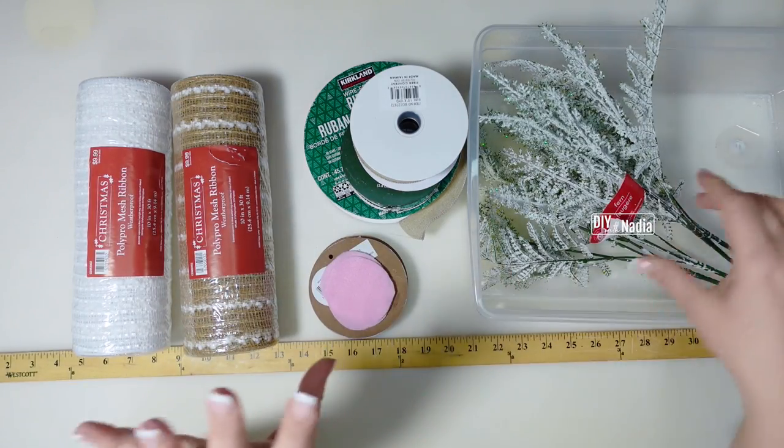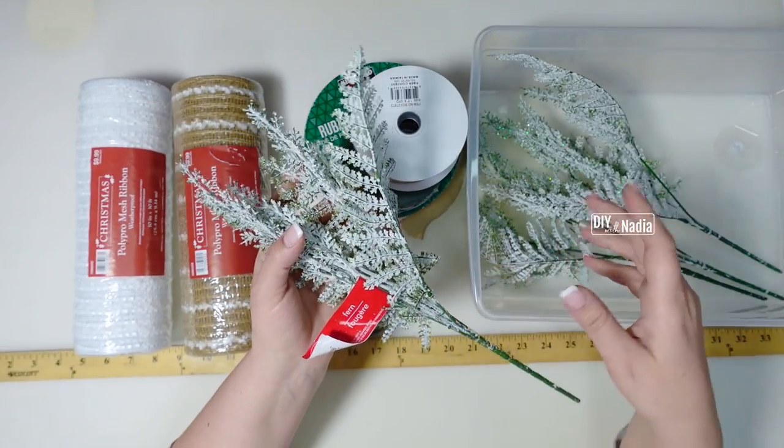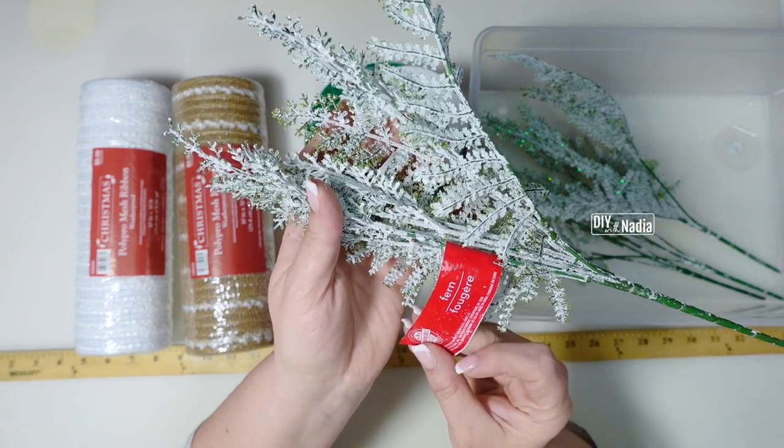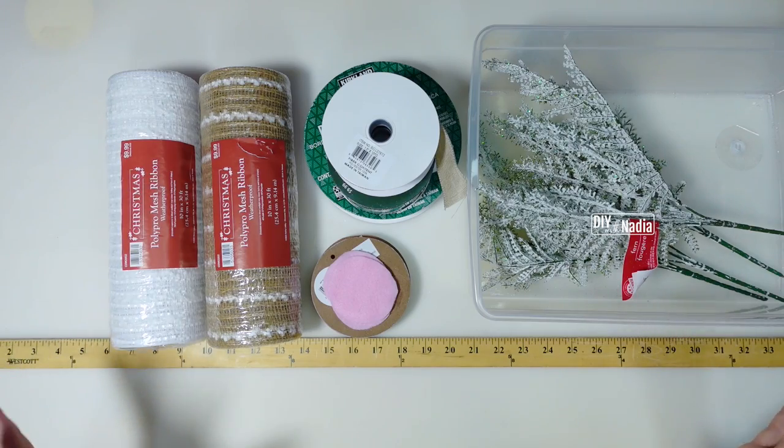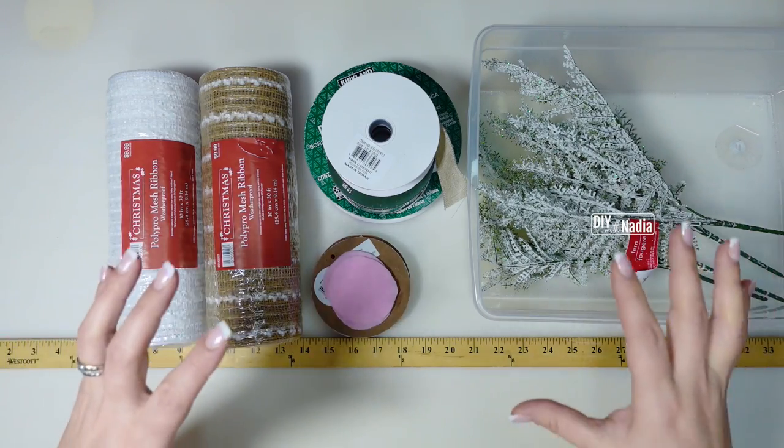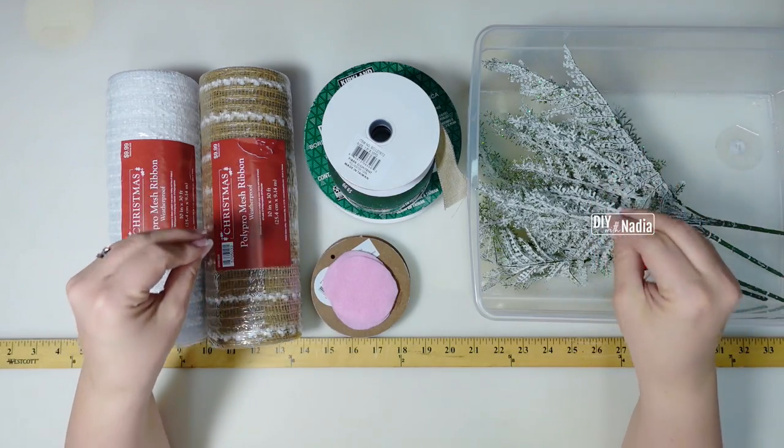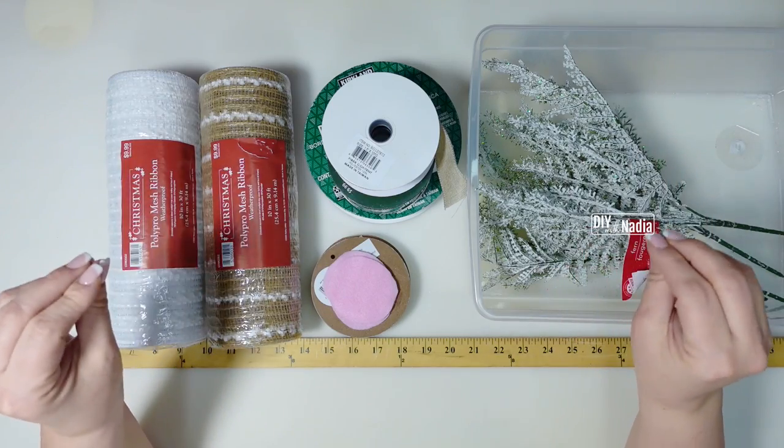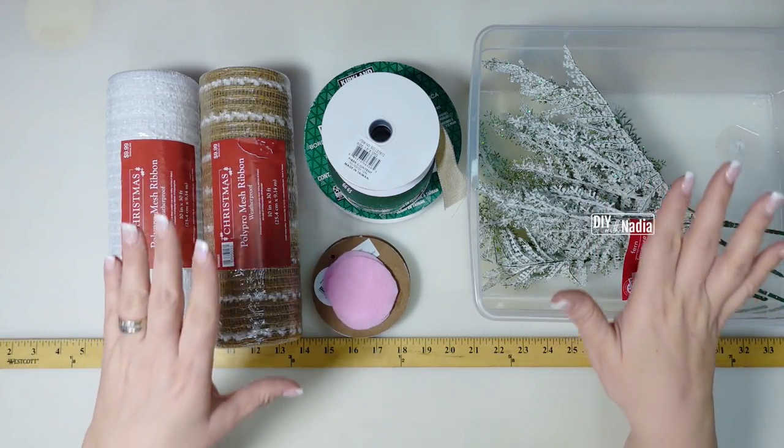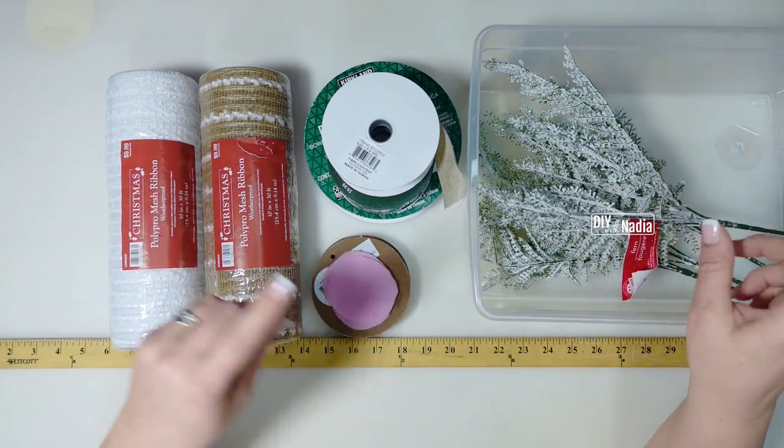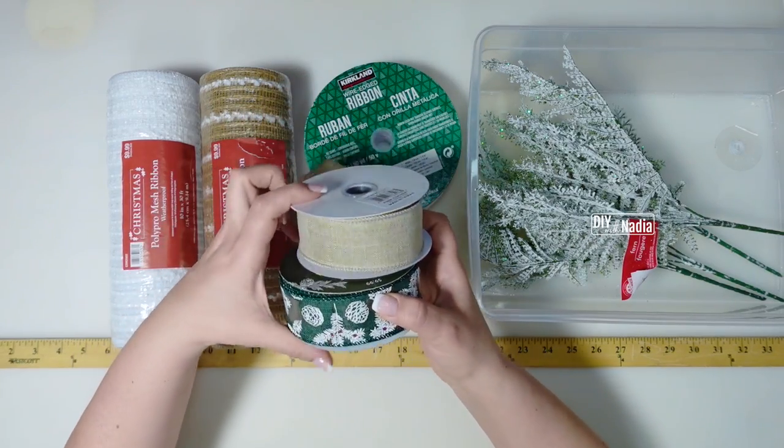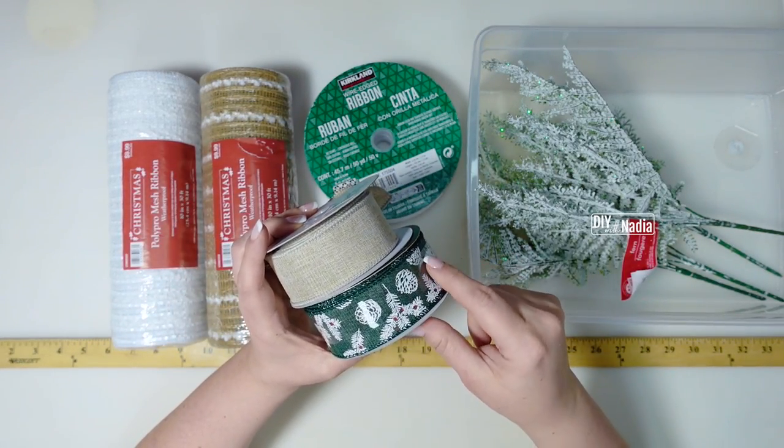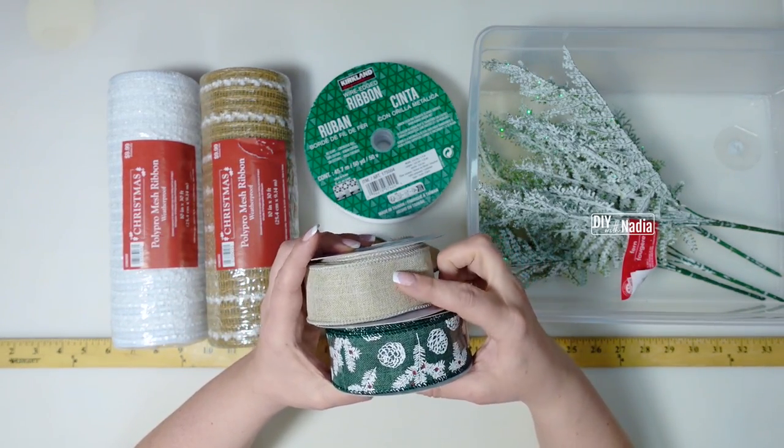The last thing you might want to consider which is optional is some greenery. I'm going to be using this frosted fern. This centerpiece is going to be quite large. So what I recommend is definitely stick to three main colors unless you're doing something eclectic or fun. I would recommend sticking to three colors. In my situation, my three main colors are green, white, and this beautiful warm burlap.